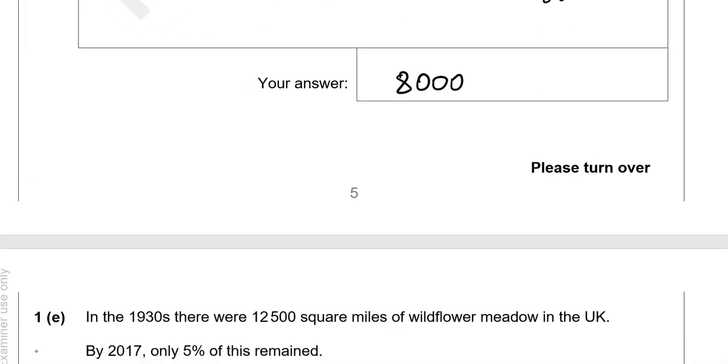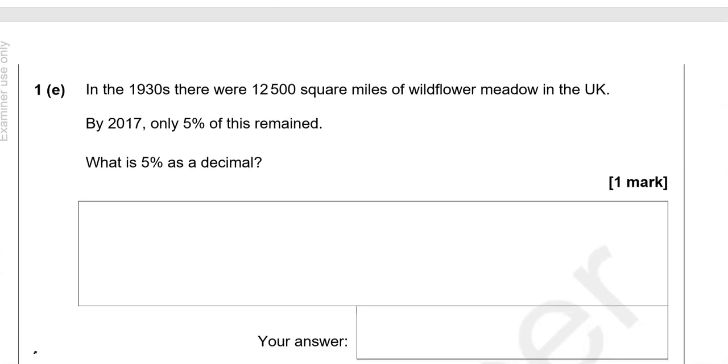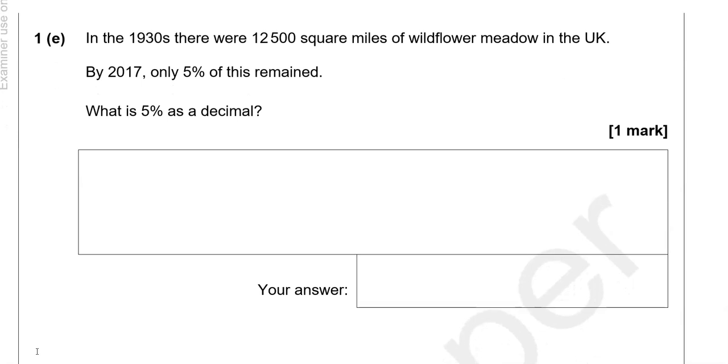Whichever method you prefer to use is perfectly fine, even if different from the ones that I've mentioned. In the 1930s there were 12,500 square miles of wildflower meadow in the UK. By 2017 only 5% of this remained.